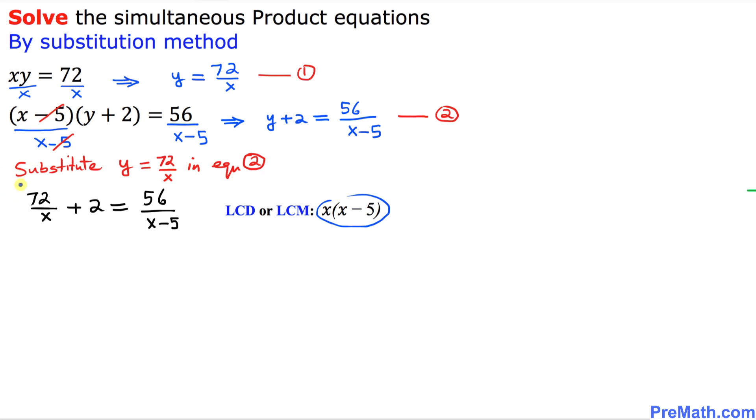I am going to multiply by x times x minus 5 in the very first term. I am going to do across the board. x times x minus 5 and x times x minus 5. So now, as you can see over here, this x and x is gone. So we simply got 72 times x minus 5. So far, so good. Likewise, plus 2 times this whole thing. Plus 2 times x times x minus 5. And right up here, this x minus 5 cancels with this x minus 5. So we ended up with equal to 56x.